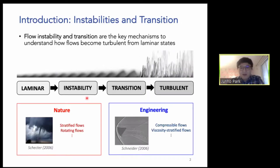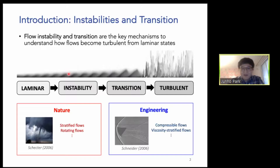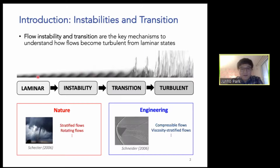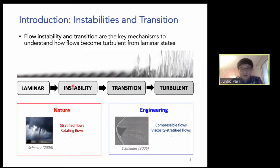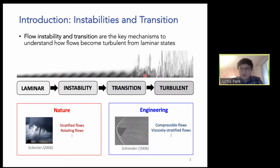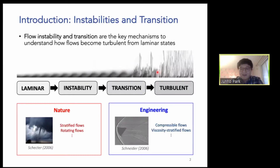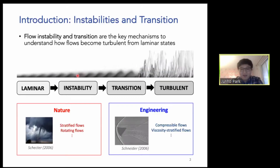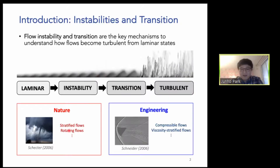I'm going to talk about instabilities and transition, and this is my favorite movie — we can see the boundary layer with some small wave entering, and due to the instability it grows, and then through the transition process it becomes fully turbulent. I was really fascinated by this phenomenon, and we can observe this in many cases in nature or engineering for many different types of flow.